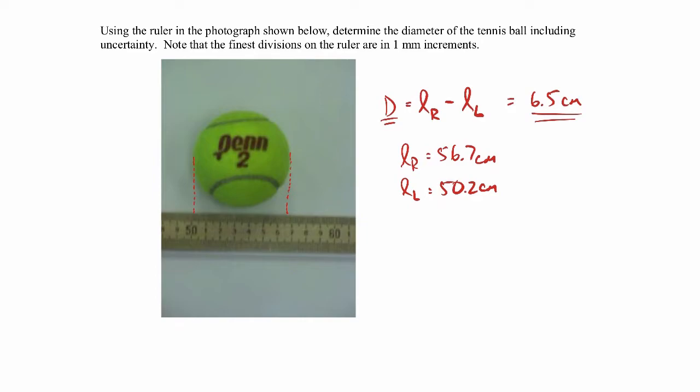So my measurement on the right side is 56.7 plus or minus 2.5 centimeters. The left side is 50.2 plus or minus 2.5 centimeters, because my least count really is five centimeters here.